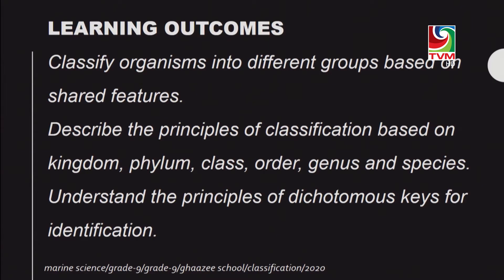First we will look at the outcomes we are going to try to achieve today. There are three major outcomes: one is to classify organisms into different groups based on shared features; describe the principles of classification based on kingdom, phylum, class, order, genus and species; and understand the principles of the dichotomous key for identification.